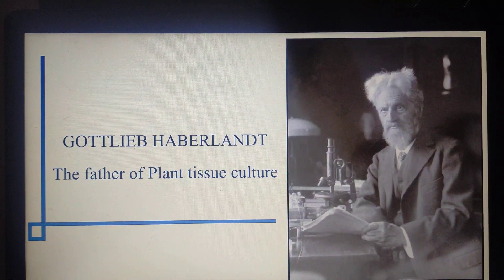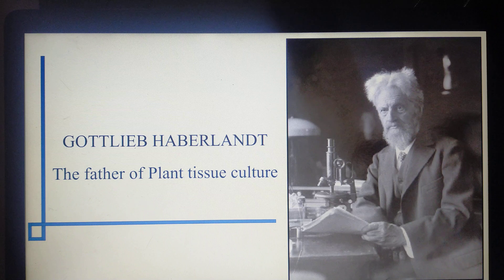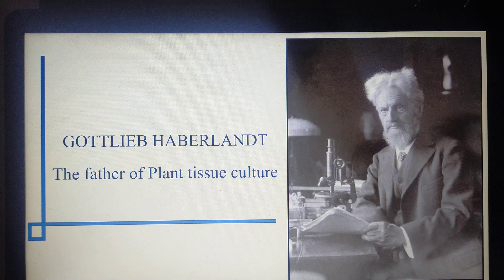Let us enter into the lesson. In the image you can see a scientist named Gottlieb Haberlandt. He was a German botanist and he was the first person to initiate the process of tissue culturing using plant tissues. He used the plant tissue of Lamium purpureum — specifically the mesophyll cells, that is the leaf cells — and he performed the tissue culturing process and got success.